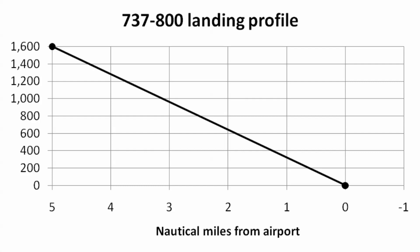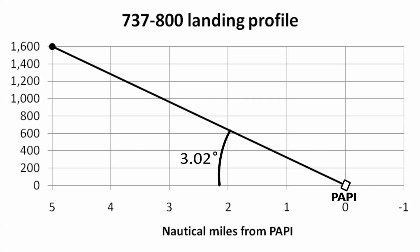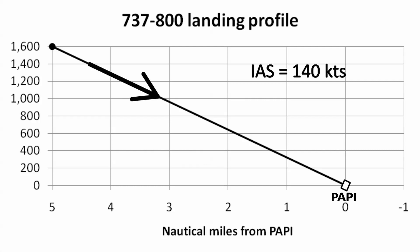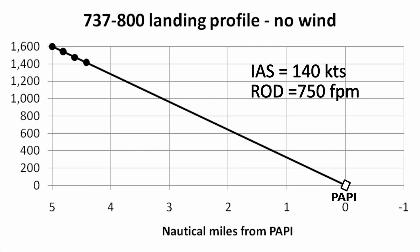If we are visual, then we're going to pick a fixed reference point on the ground somewhere near the threshold. We might use the PAPI lights for this purpose. So long as we keep the PAPI lights at a fixed position in the windscreen, we will be moving directly towards the PAPIs and, hopefully, towards a good touchdown. The geometric line connecting the start of the final and the PAPI lights has an elevation angle of 3.02 degrees. Note that the geometric lines all the way down from the top of descent have been a succession of tracks with elevation angles just over three degrees, and this continues on final. Good basic settings for the final are an instrument airspeed of 140 knots and a rate of descent of 750 feet per minute.